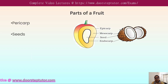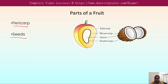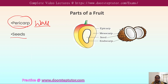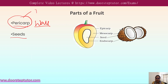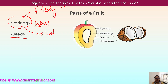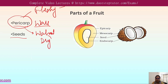There are two parts present in the fruit: the pericarp and the seed. The pericarp is the wall of the ovary that also develops as the wall of the fruit. The pericarp of the fruit may be fleshy, as in guava and mango, or it may be dry, as we can see in the walnut.